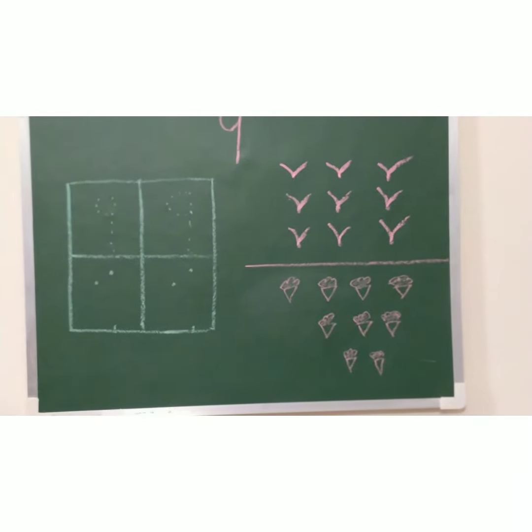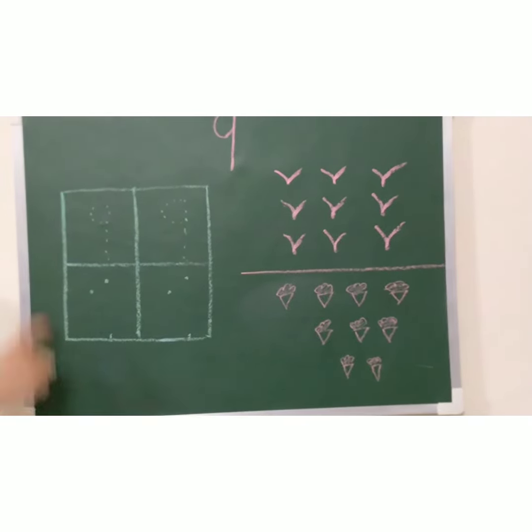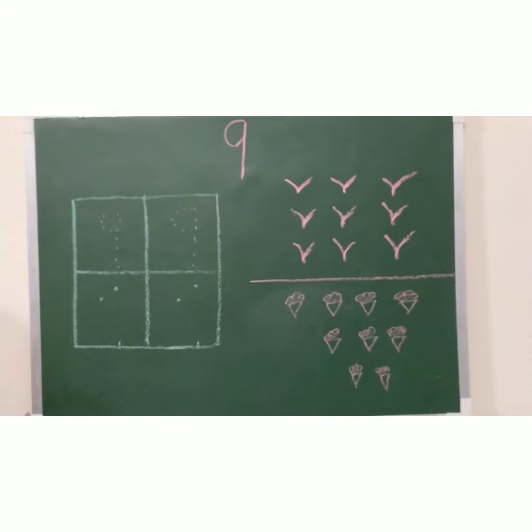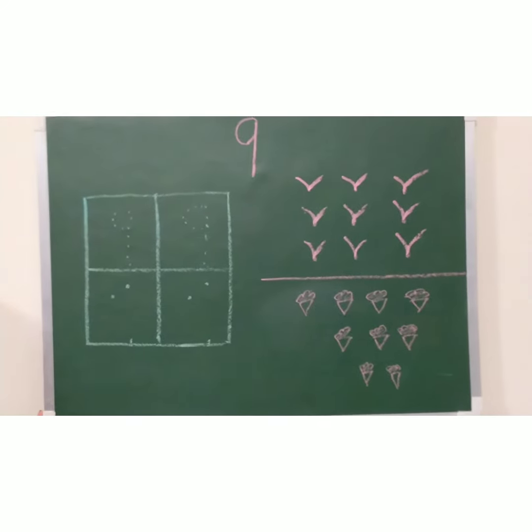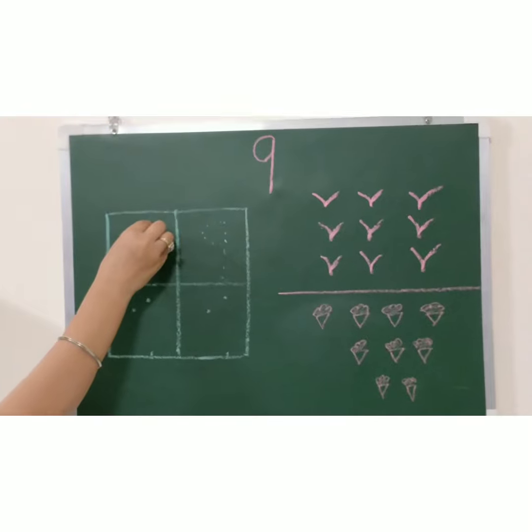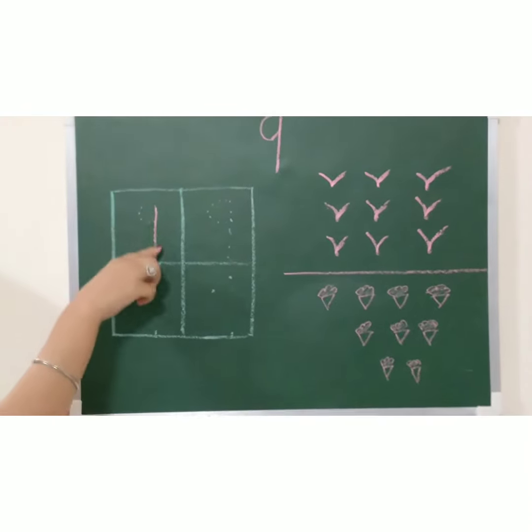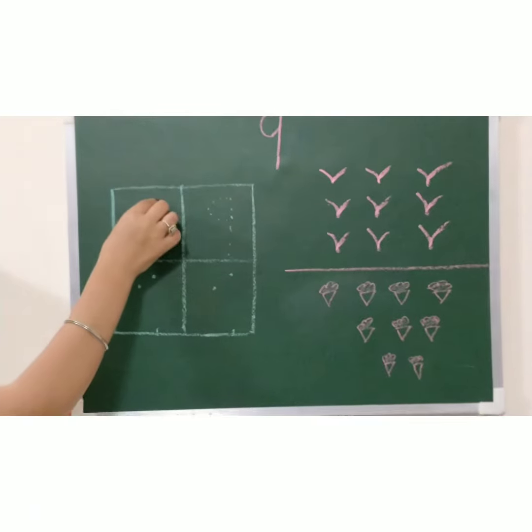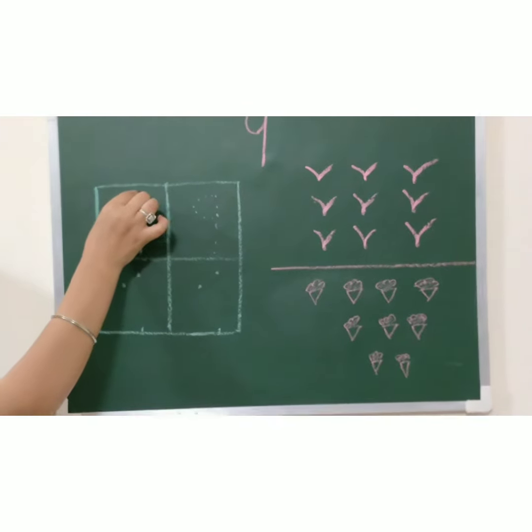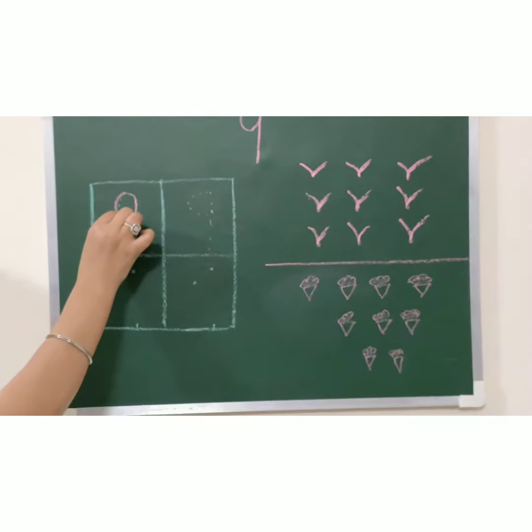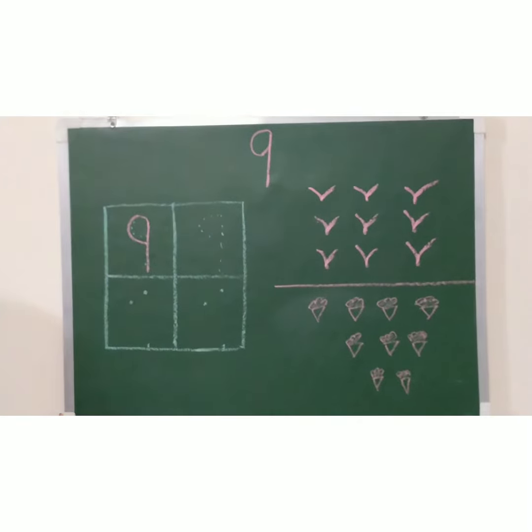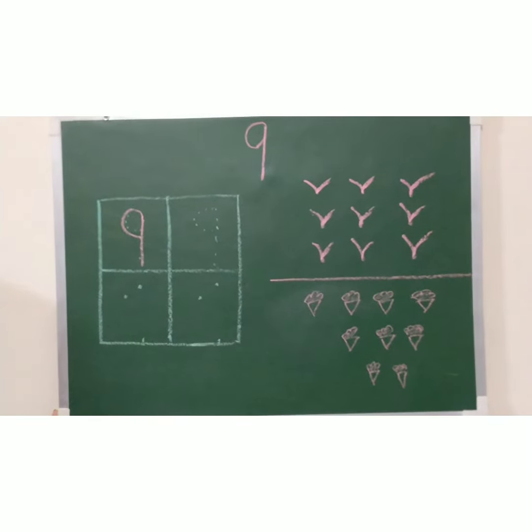Let's see how to write number 9. In your maths copy boxes are already given. First you need to draw one straight standing line from up to down and then you need to join or you need to make one small curve, okay.